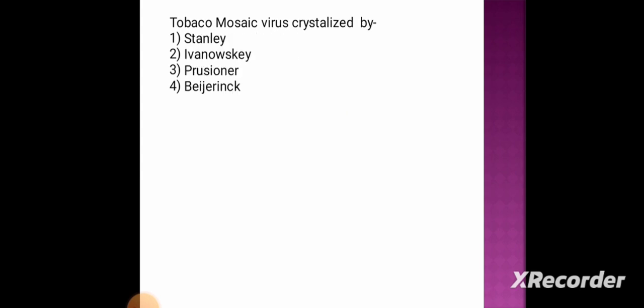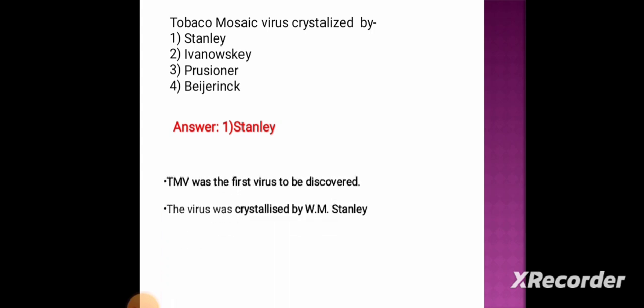Next question: the tobacco mosaic virus was crystallized by — option 1: Stanley, option 2: Ivanowski, option 3: Prusiner, option 4: Beijerinck. The correct answer is option 1, Stanley. TMV was the first virus to be discovered, and it was crystallized by W.M. Stanley.